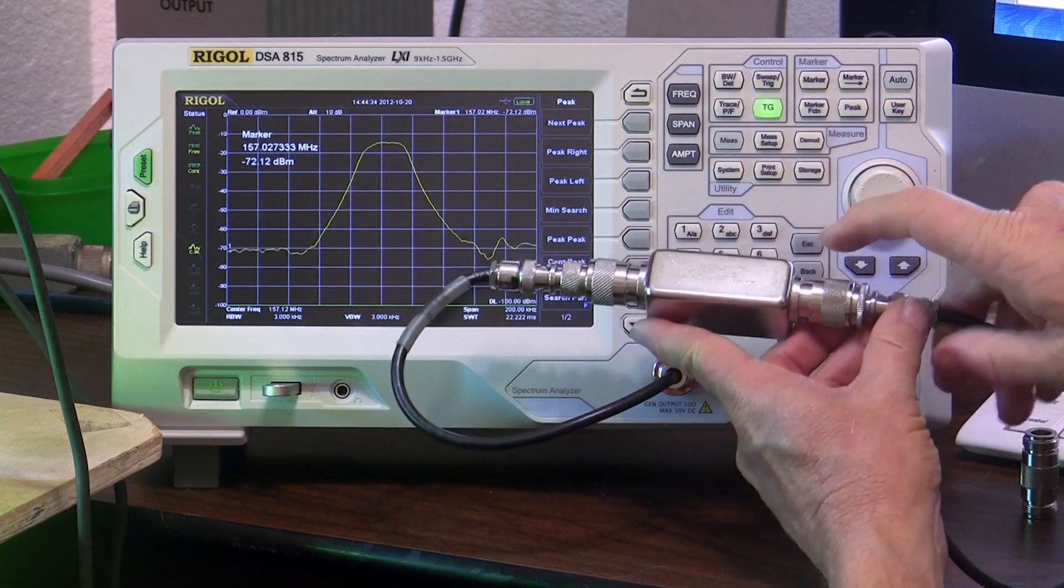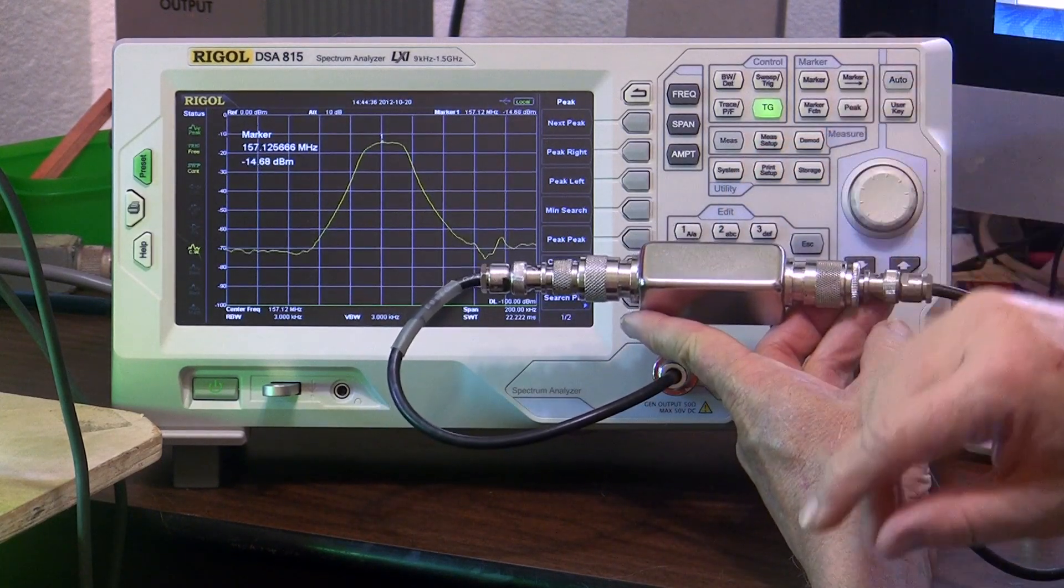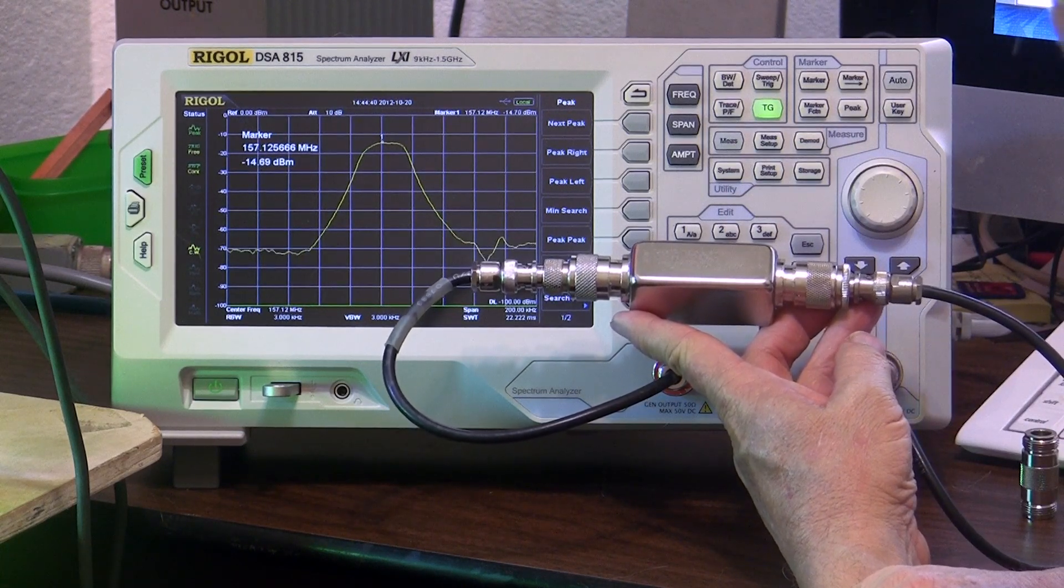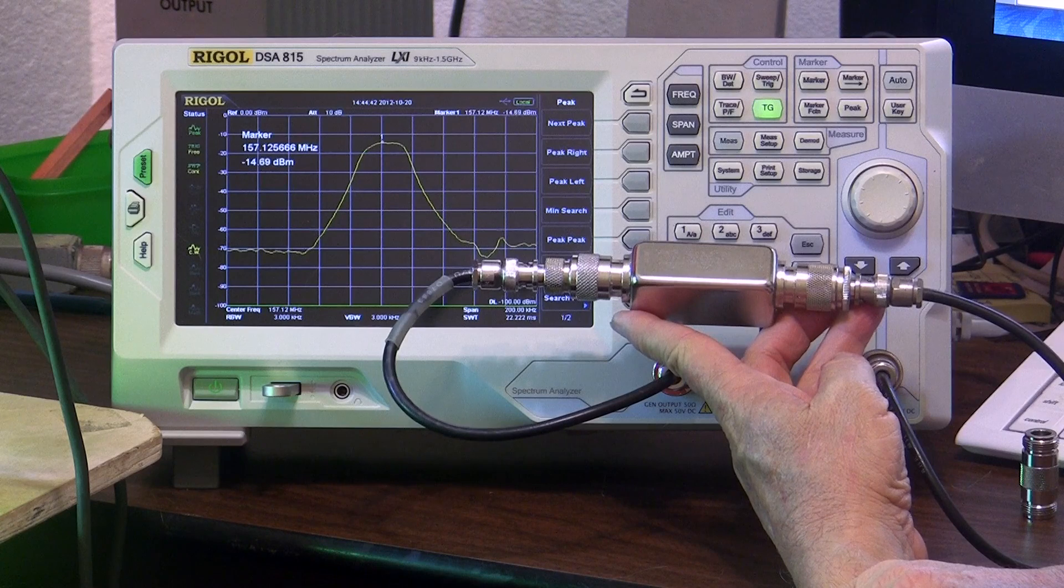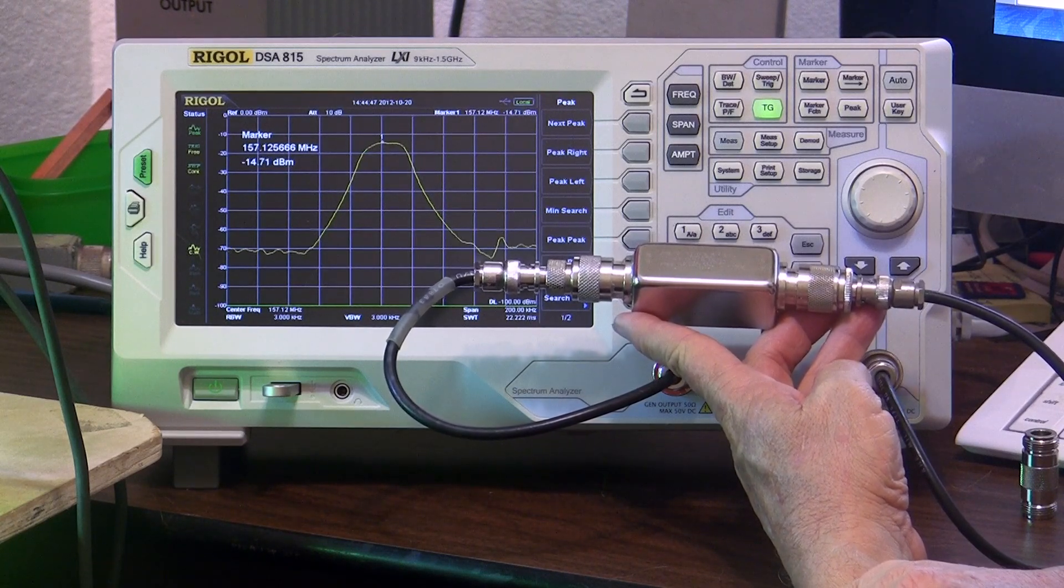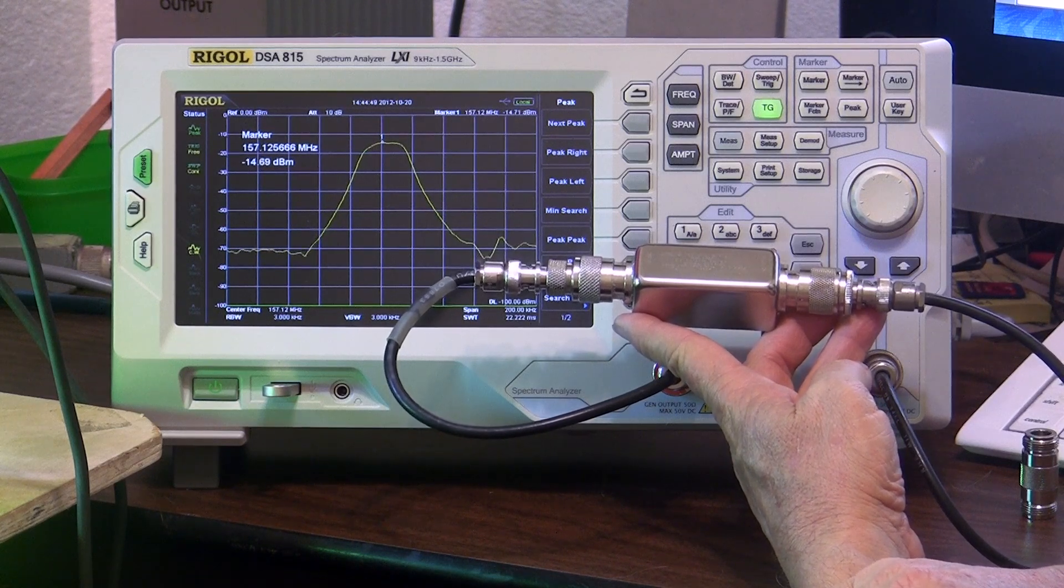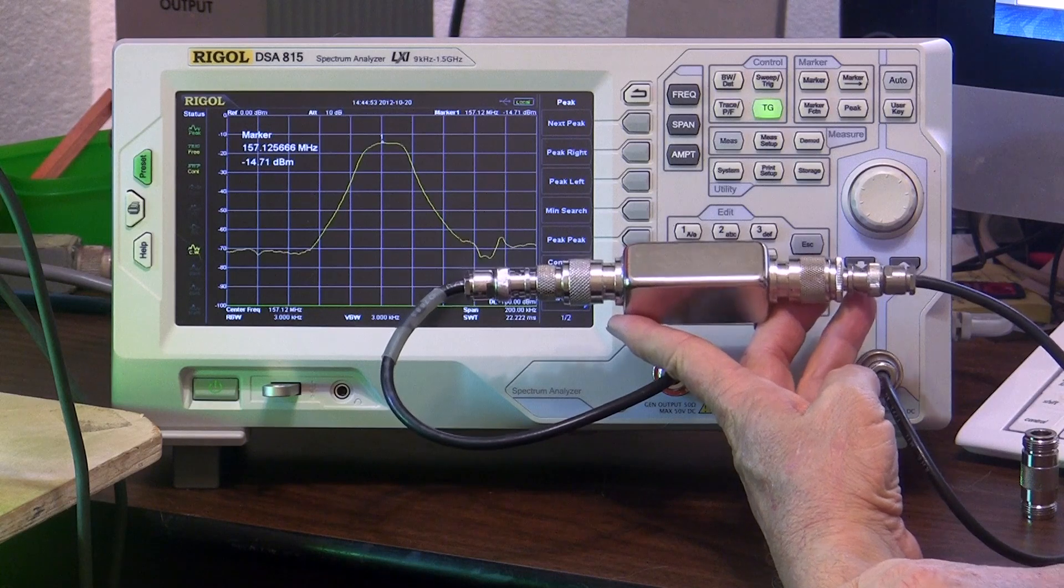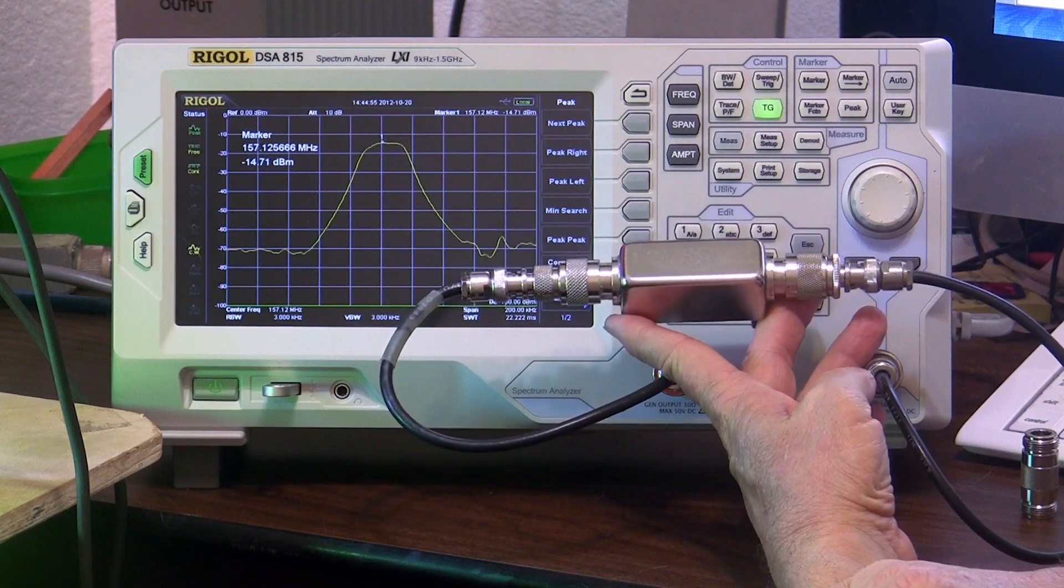Let's put a marker on the peak here. And it's now minus 14.7. So we went from minus 9.6 I think it was to minus 14.7. So there you go. We have in the neighborhood of 6 dB of loss to this filter, which is not uncommon for a filter of this type.